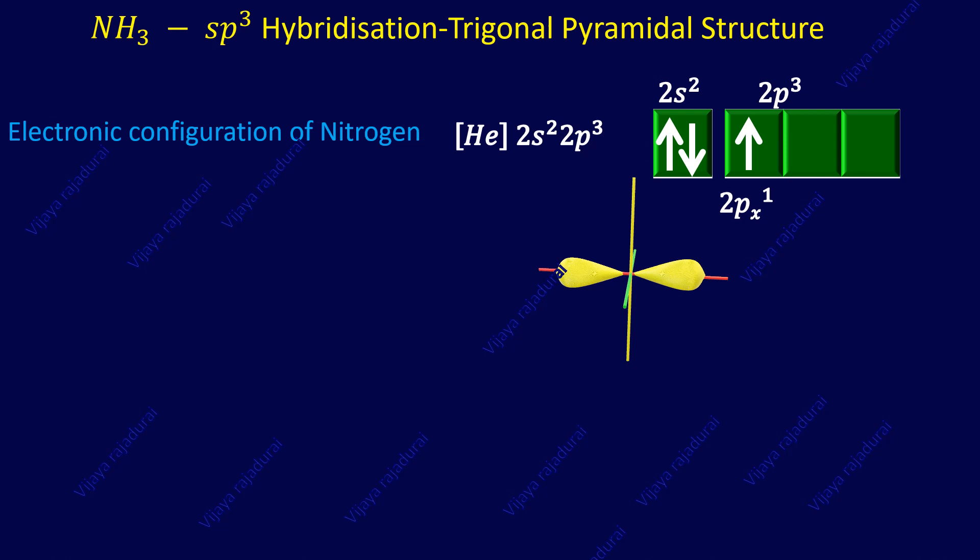Here you can see 2px orbital, 2py orbital, and 2pz orbital which are oriented along x, y, and z axis respectively.